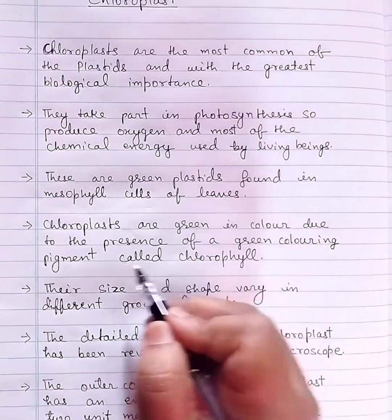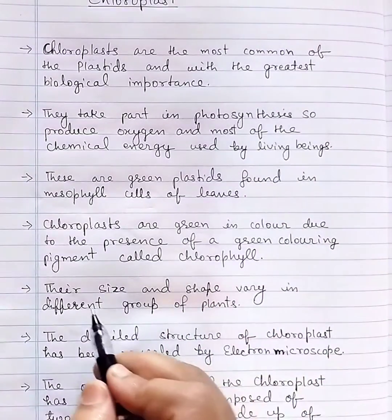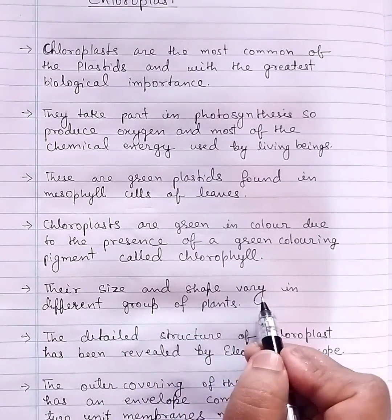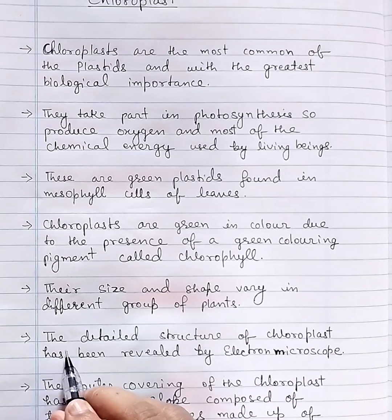Chloroplasts are green in color due to the presence of a green coloring pigment called chlorophyll. Their size and shape vary in different groups of plants.